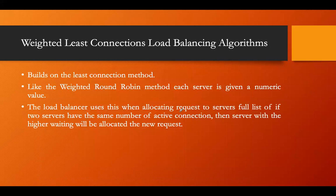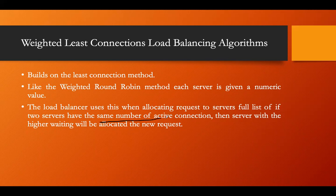This is called the Weighted Least Connection load balancing algorithm, which is a modification of the previous algorithm. Like the weighted round robin method, each server is given a numeric value. The load balancer uses this when allocating requests to servers. If two servers have the same number of active connections, the server with the highest weight will be allocated the new request. Weight comes into play when two servers have the same active connections.